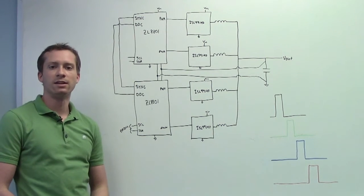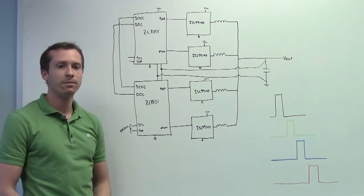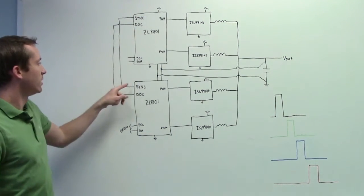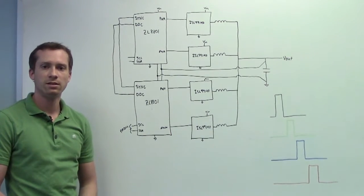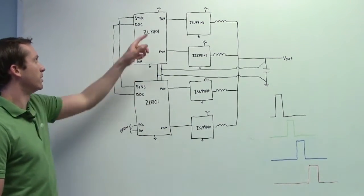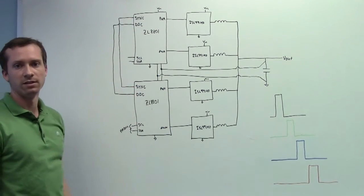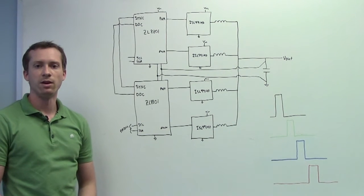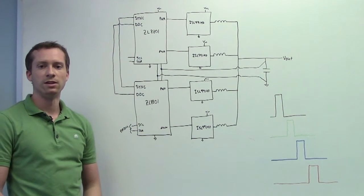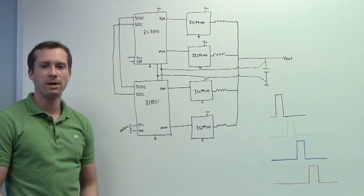So let me go into some details about what DDC and sync mean. The sync bus allows us to synchronize the clock spreading between the two devices. One of the devices outputs its clock, and the other device receives that as an input. This allows us to do phase spreading to have ripple cancellation in a current share application.